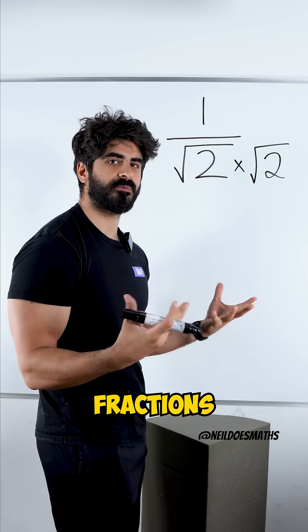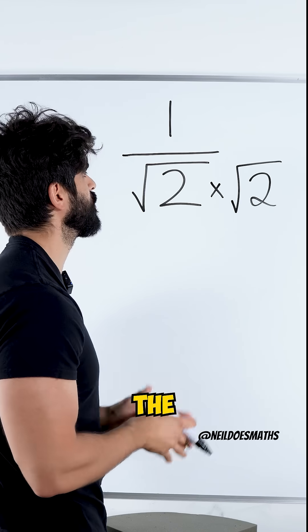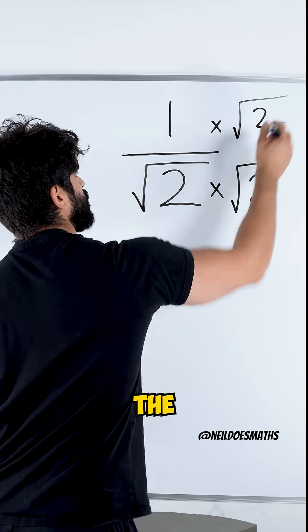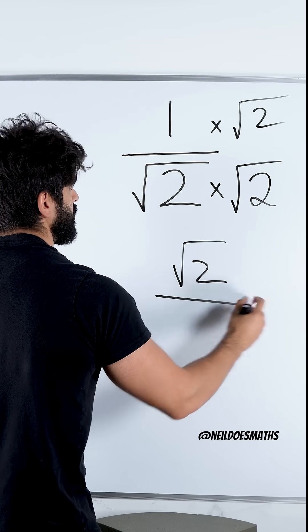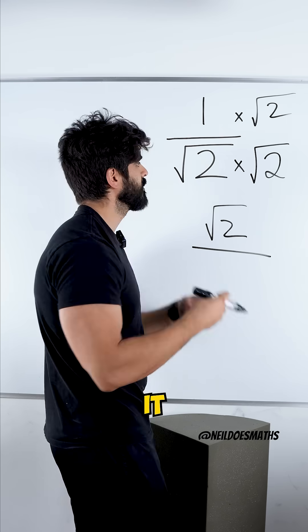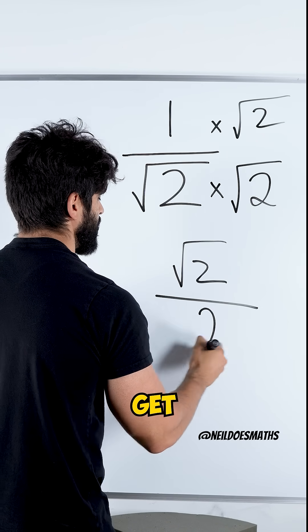But remember, we need to think about equivalent fractions here. What you do to the denominator, you must do to the numerator. One times root two is just root two. Root two times root two means to square it. The root disappears, and we get two.